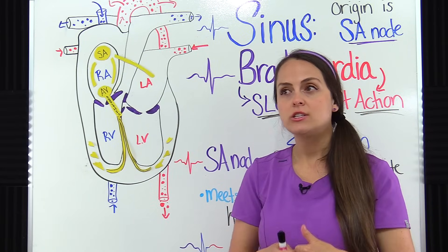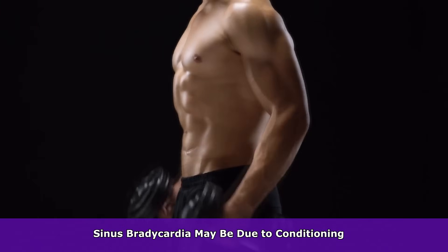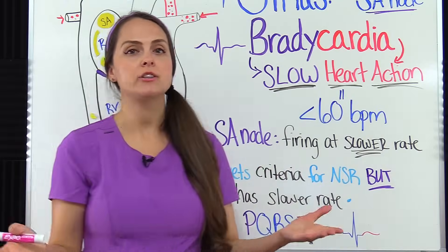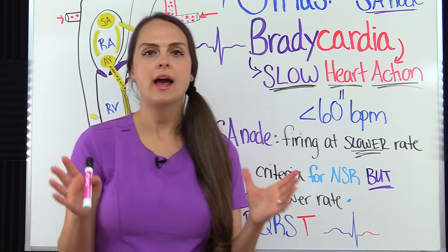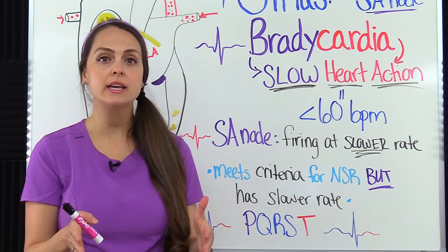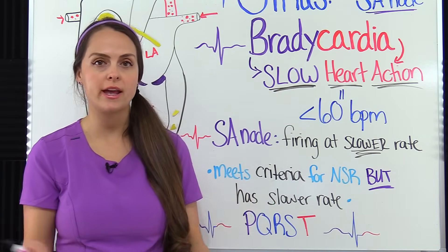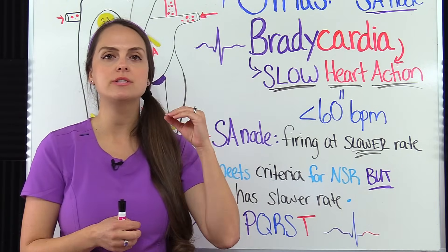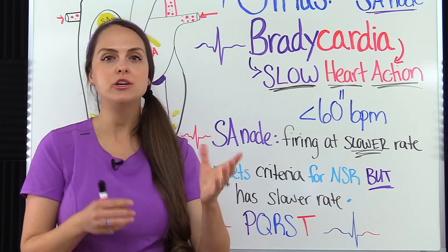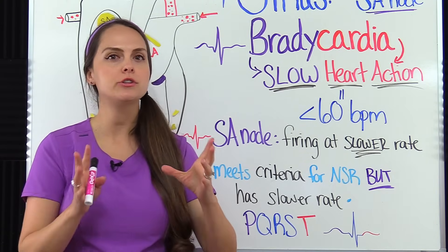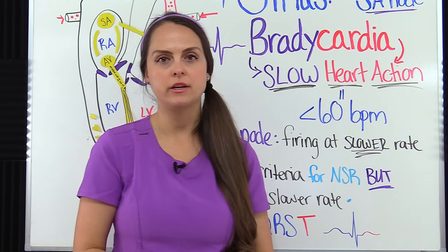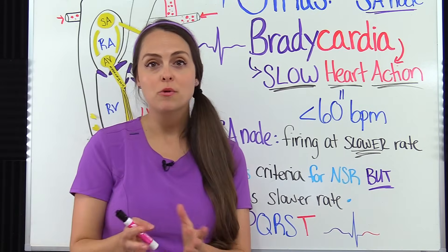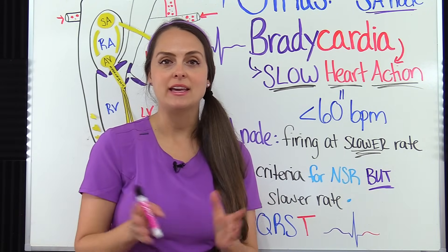Or the patient is just athletic and very well conditioned, so their heart beats at a slower rate. As a nurse, whenever you're taking care of a patient and looking at their EKG, how can you tell that this patient is having sinus bradycardia? Anytime you're analyzing a rhythm, you want to go through a checklist and ask yourself certain questions. To do this, you can remember PQRST, because that is what we're going to be analyzing on that EKG.